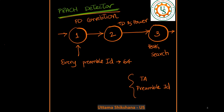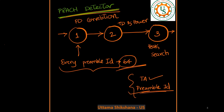At the gNB, the PRACH detector will be running for every preamble ID — for all 64 preamble IDs, the correlation would be done and there will be a check on whether a definite peak is formed or not. If a peak is formed and it is above a certain threshold value, then the preamble ID would be detected, and correspondingly the timing advance and preamble ID would be reported to L2.